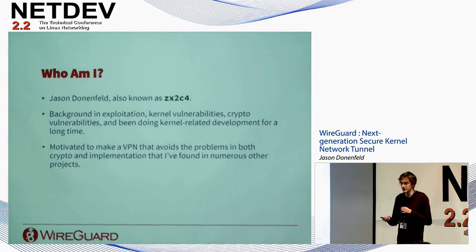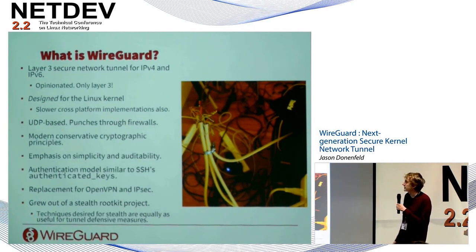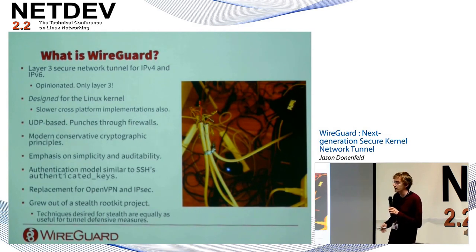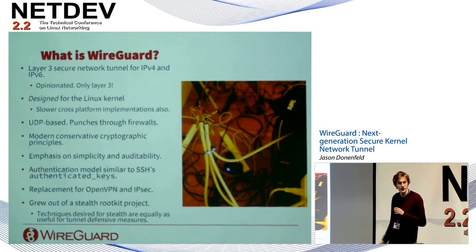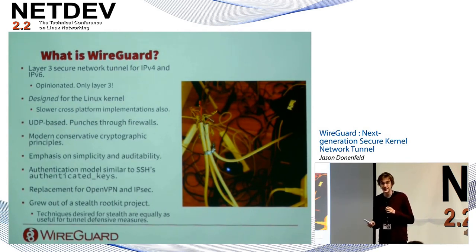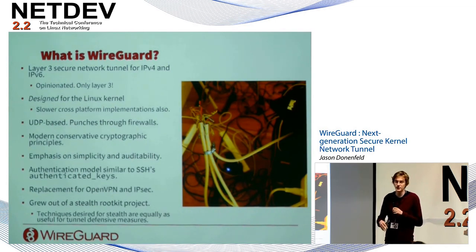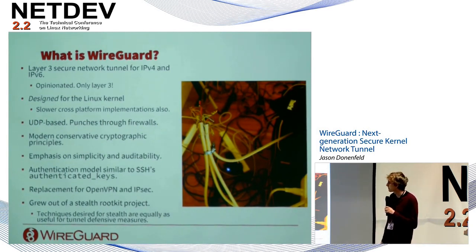WireGuard is a layer 3 secured network tunnel for IPv4 and IPv6. It's very opinionated — layer 3 only, not layer 2 — because layer 3 is considered the right way to make secure tunnels. These opinionated decisions create a simpler situation that leads to better overall security.